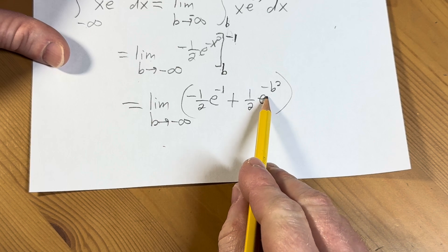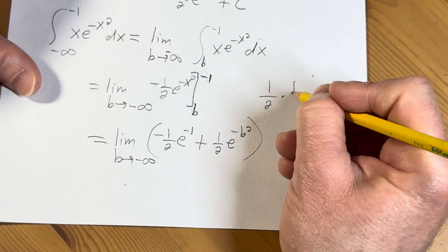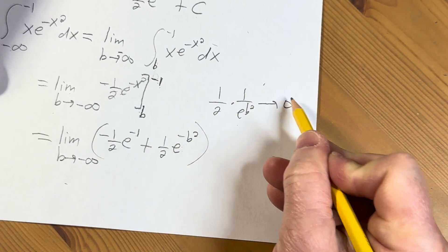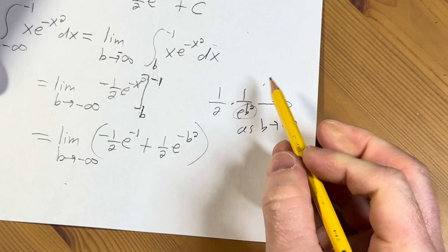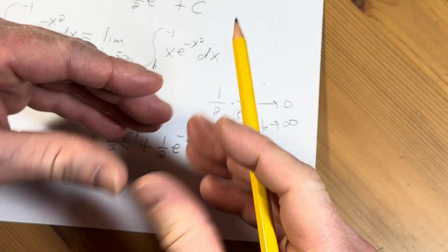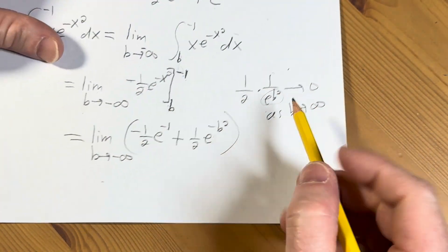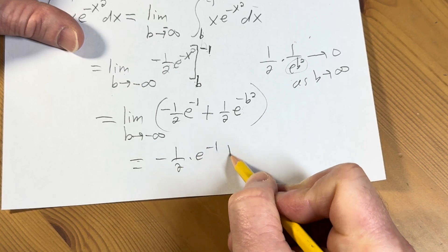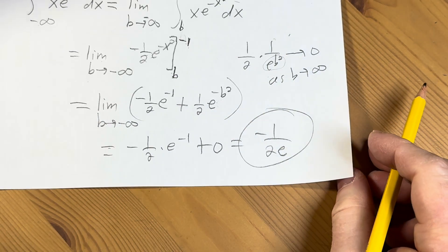This here is going to approach 0. Because this is really this, and so as b approaches infinity, this approaches 0. Because the denominator here goes without bound, so this fraction gets smaller and smaller. It gets closer and closer to 0. So this is equal to negative 1 half times e to the negative 1 plus 0, which is negative 1 over 2e.